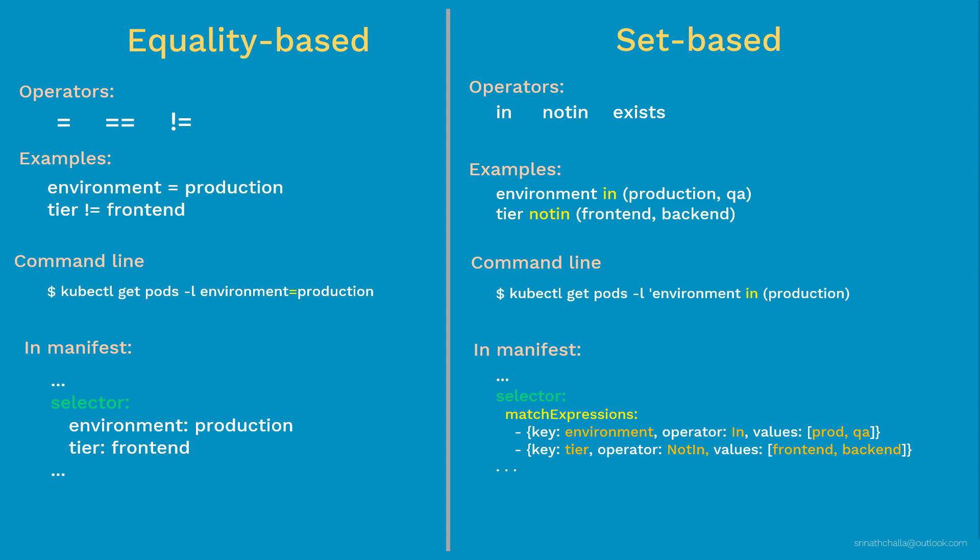In the first matchExpression example, we are selecting all pods whose environment is in 'prod' or 'QA'. In the other, we are selecting all pods whose tier is not in 'frontend' or 'backend'. At a high level, equality-based selectors are easy to use and understand but less powerful, whereas set-based selectors are slightly more complex but more powerful.